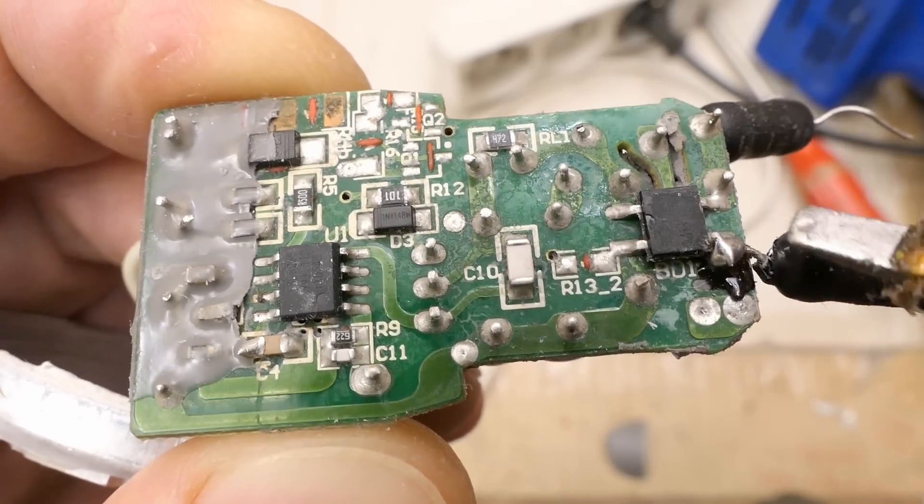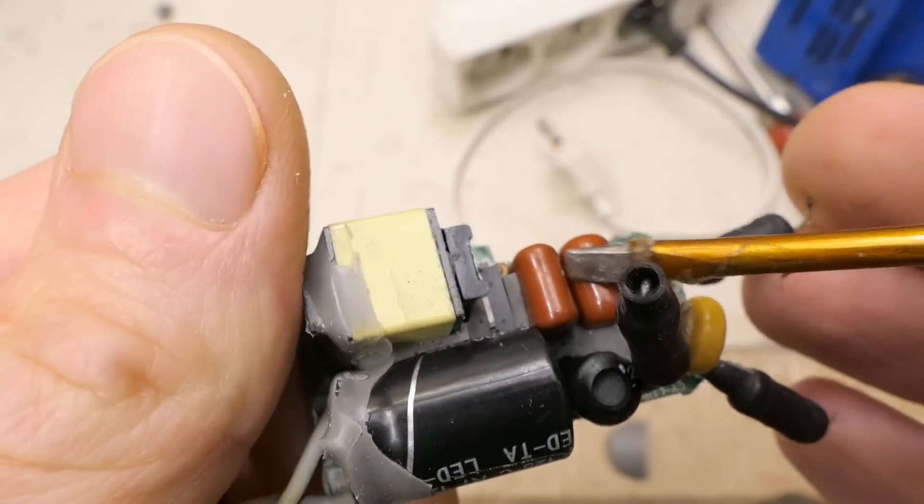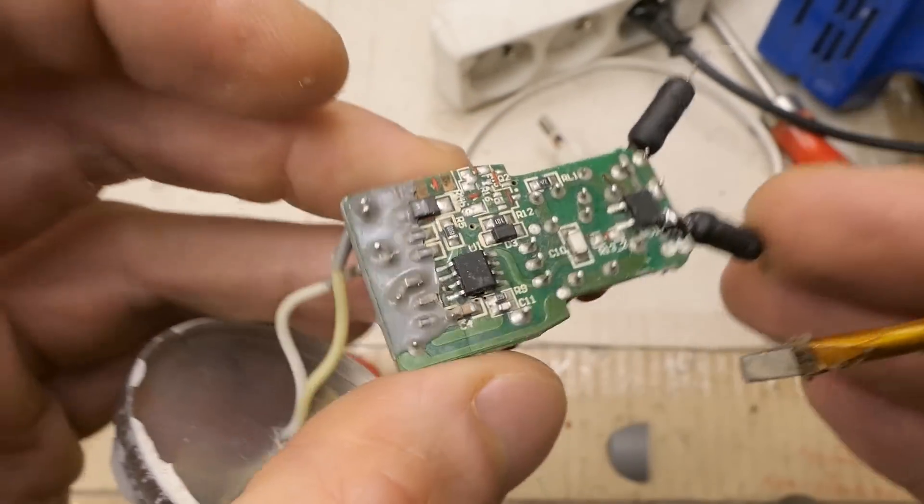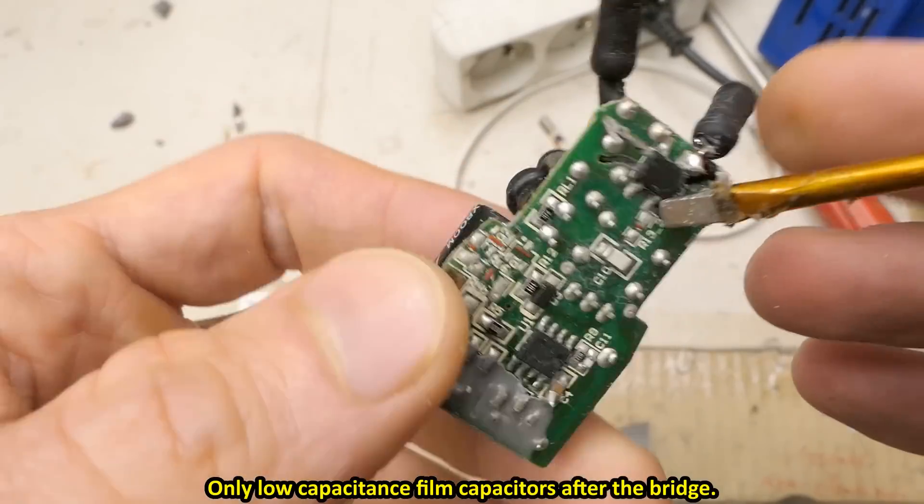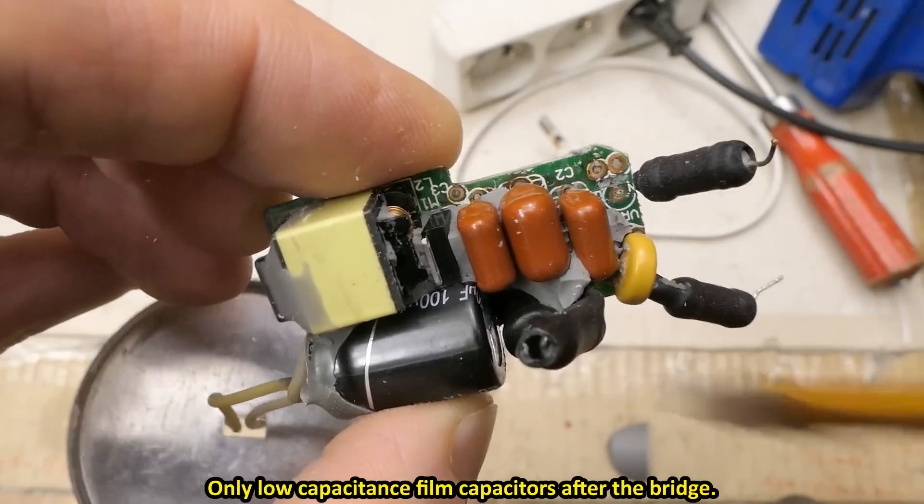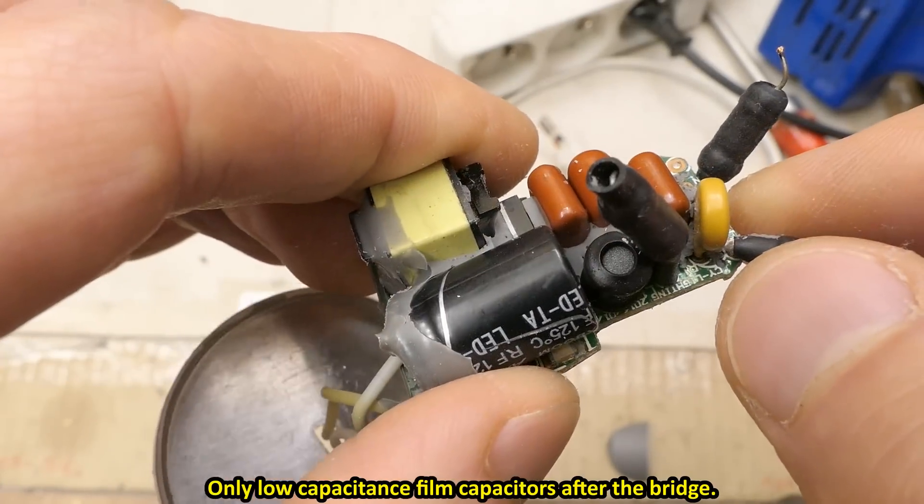It has the two resistors going into a bridge rectifier. Then there are some capacitors here. And a big capacitor parallel to the LEDs. No big electrolytic capacitor after the bridge rectifier, just smaller capacitors. So I guess this one has to have a good power factor and might also be dimmable.